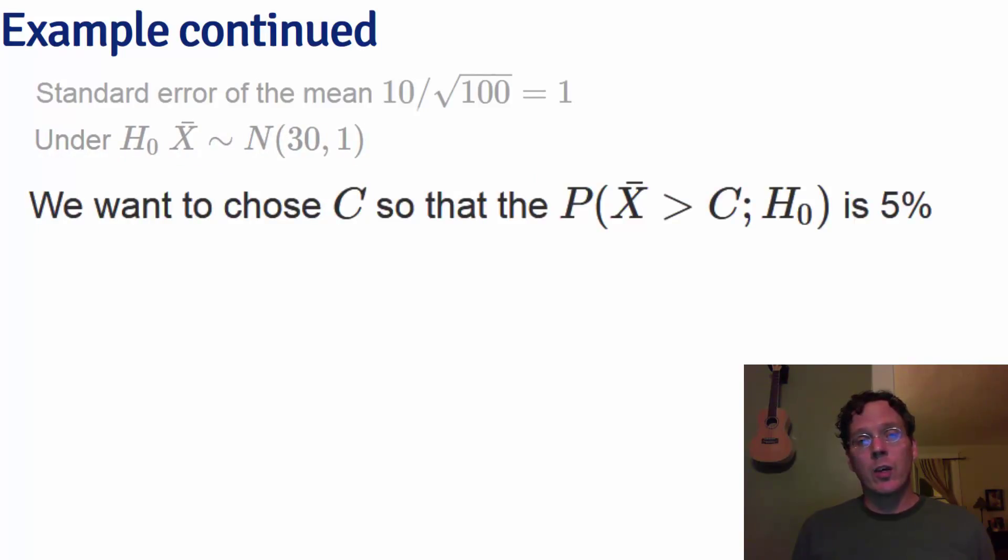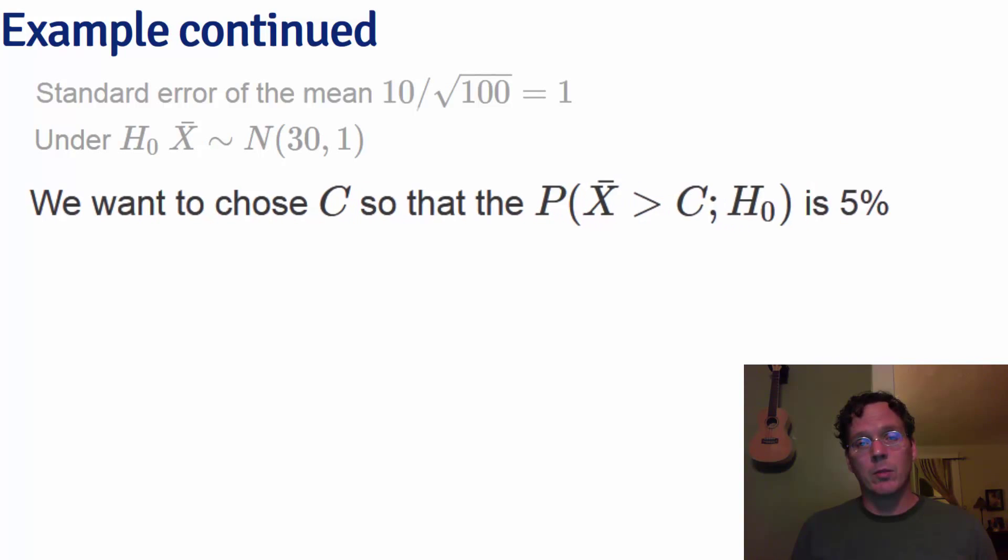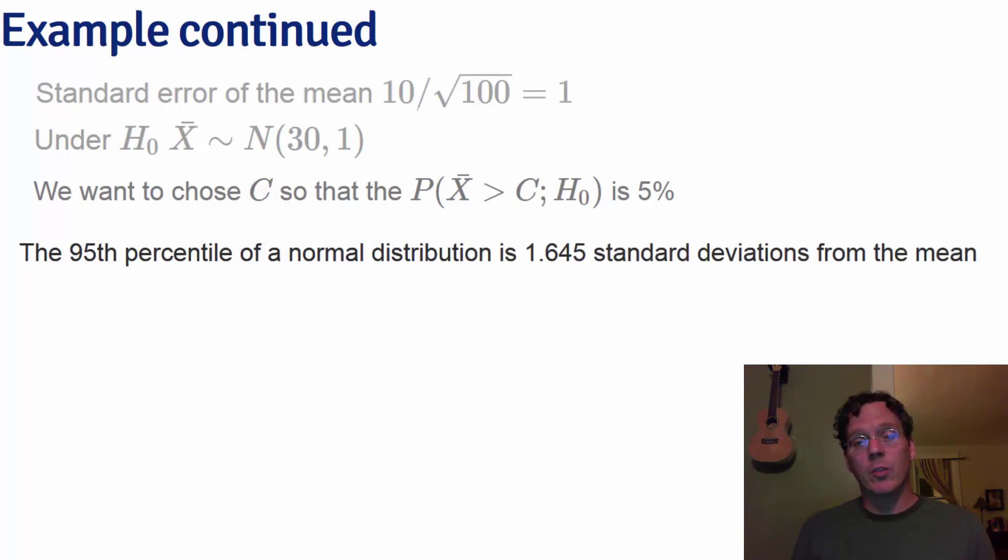So we want to choose the constant c so that the probability that x bar is larger than c under the null hypothesis is 5%. Remember the 95th percentile of the standard normal distribution is 1.645 standard deviations from the mean.